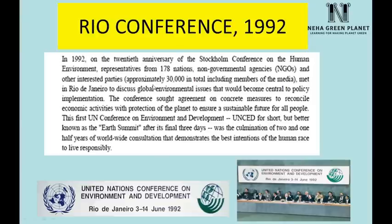The Rio Conference of 1992 was held 20 years after Stockholm, with 178 countries participating along with many NGOs, media persons, and other participants. Also known as the United Nations Conference on Environment and Development, it was decided that sustainable development guidelines should be prepared, and the documents on how the world would move toward a sustainable model were established here.